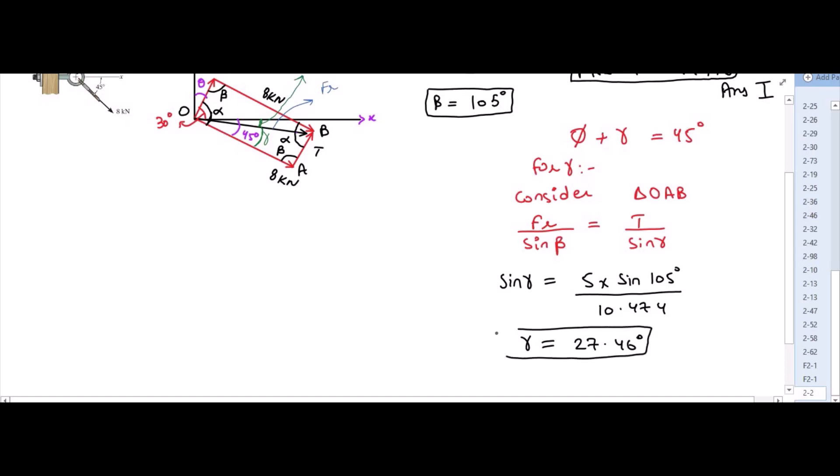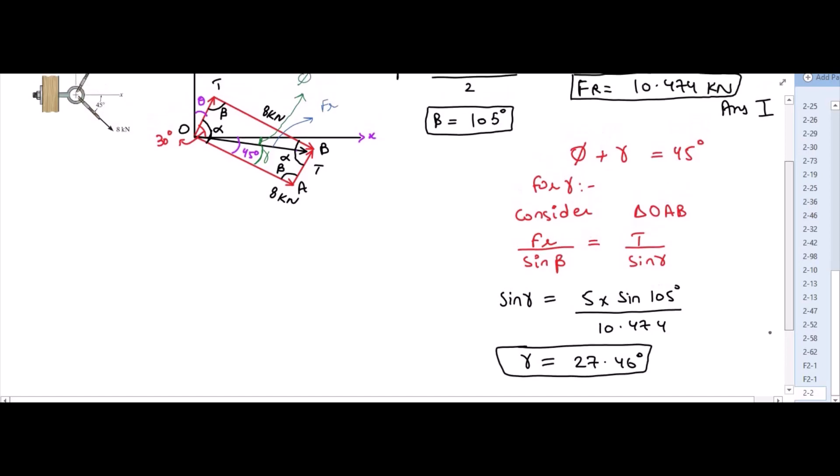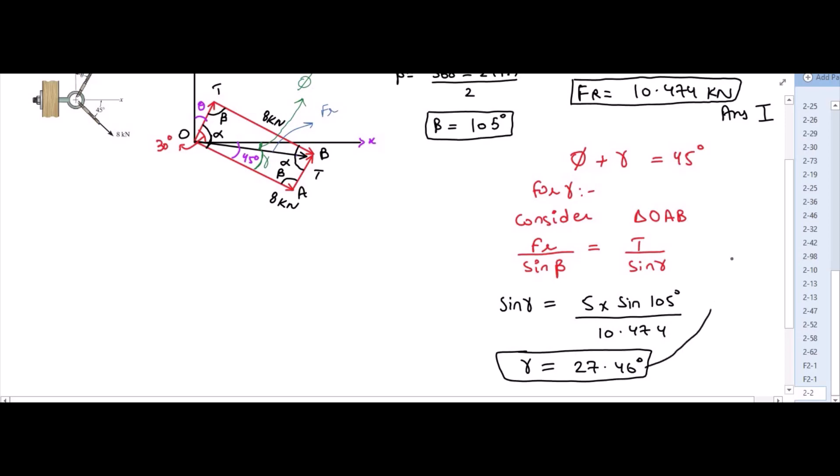Now to find the angle phi we have to put this gamma back into this equation. So from here phi is equal to 45 degrees minus 27.46 degrees. So phi is equal to 17.54 degrees. So this is our second answer.